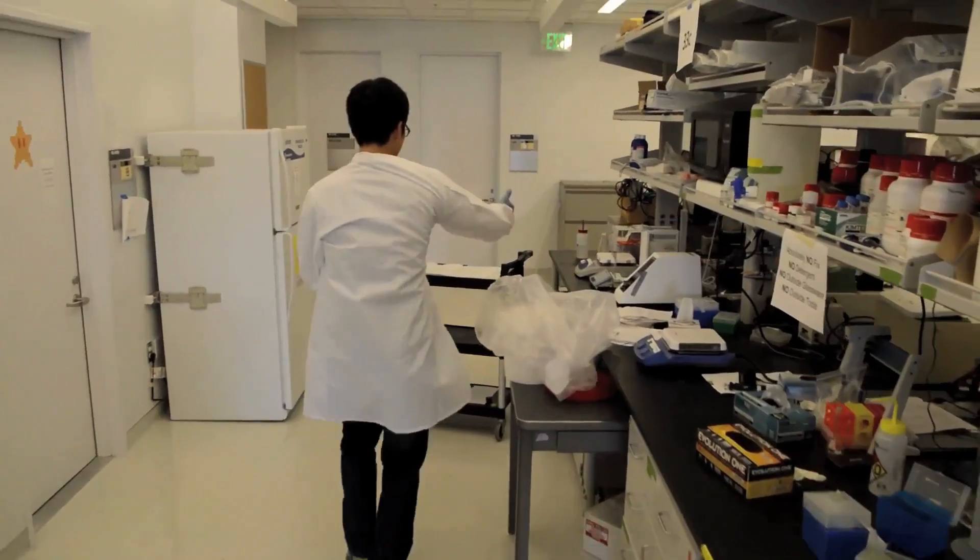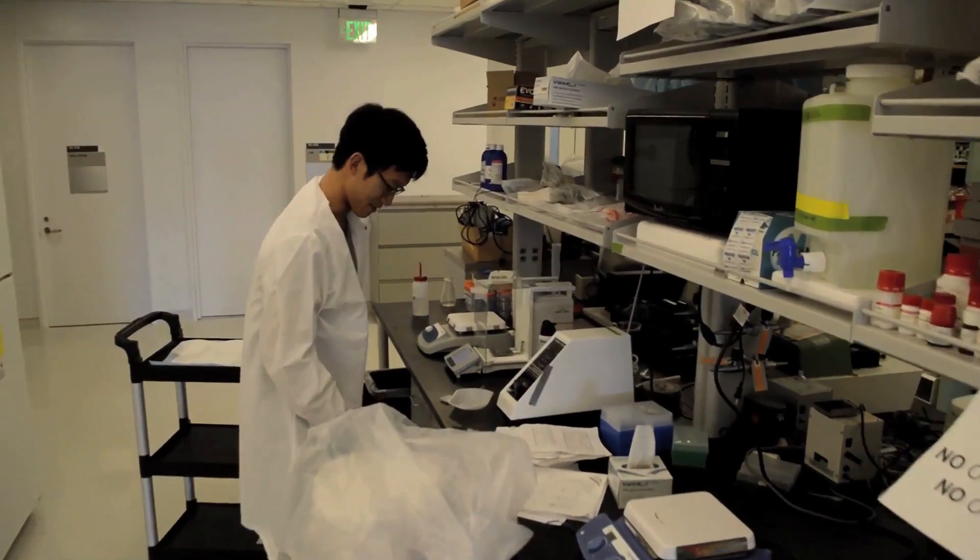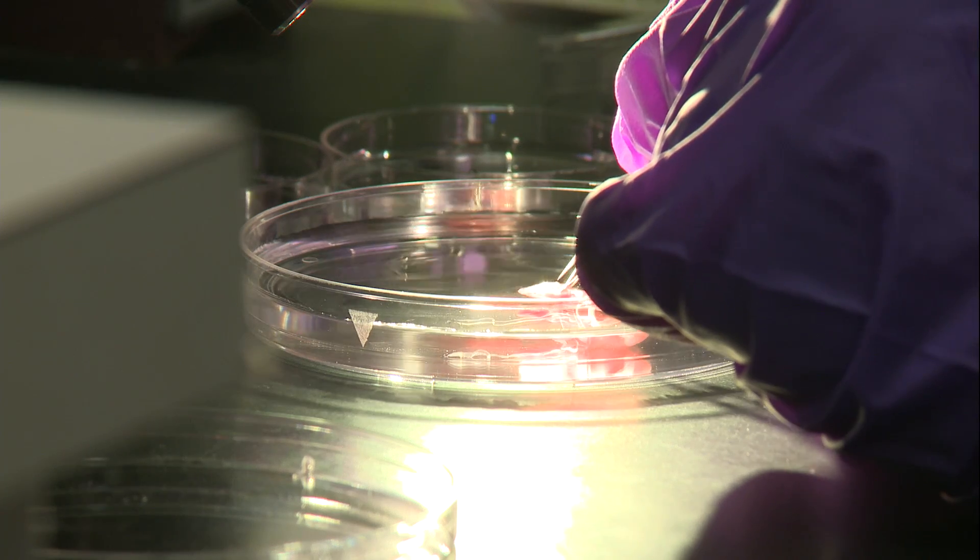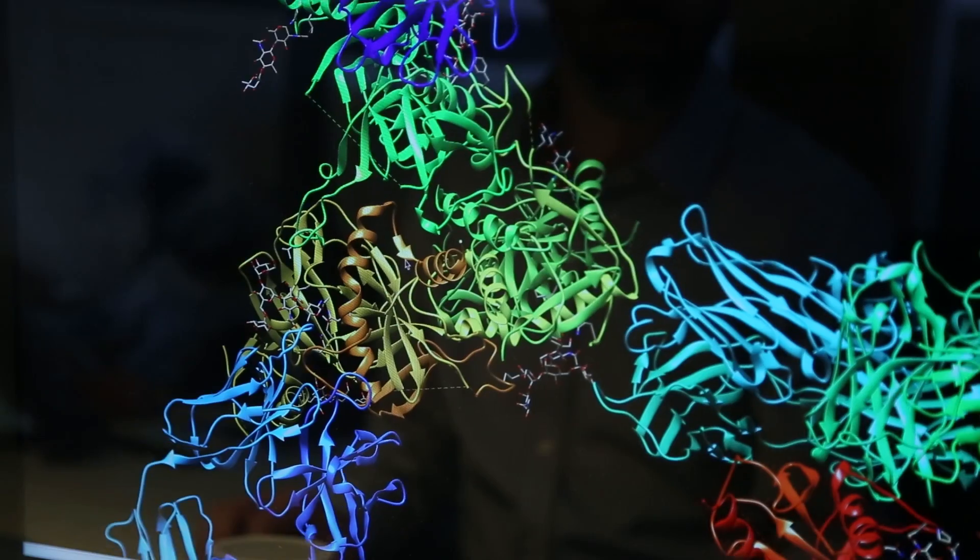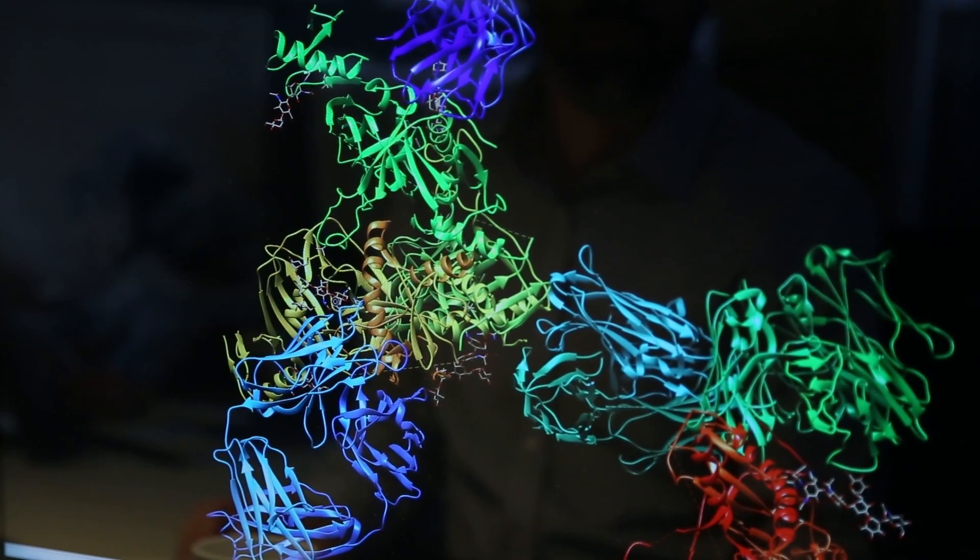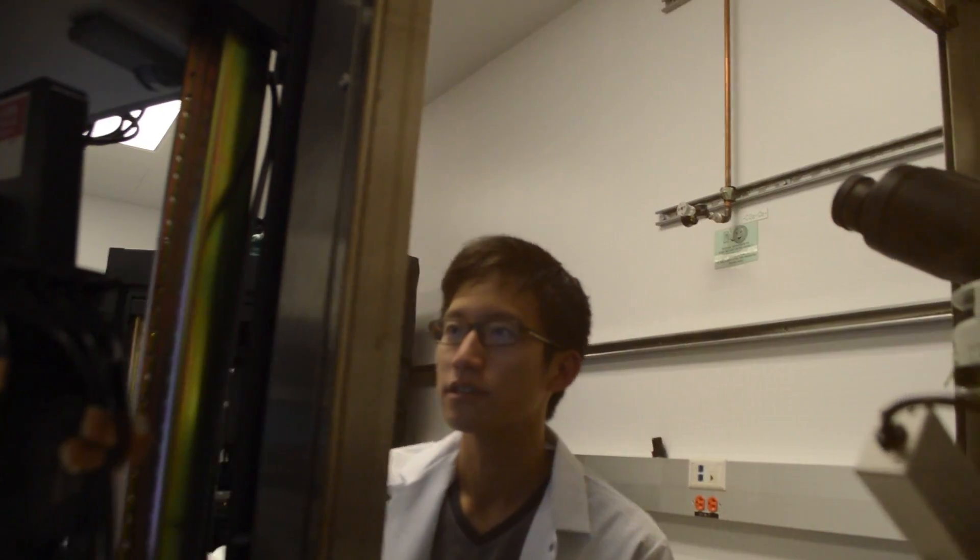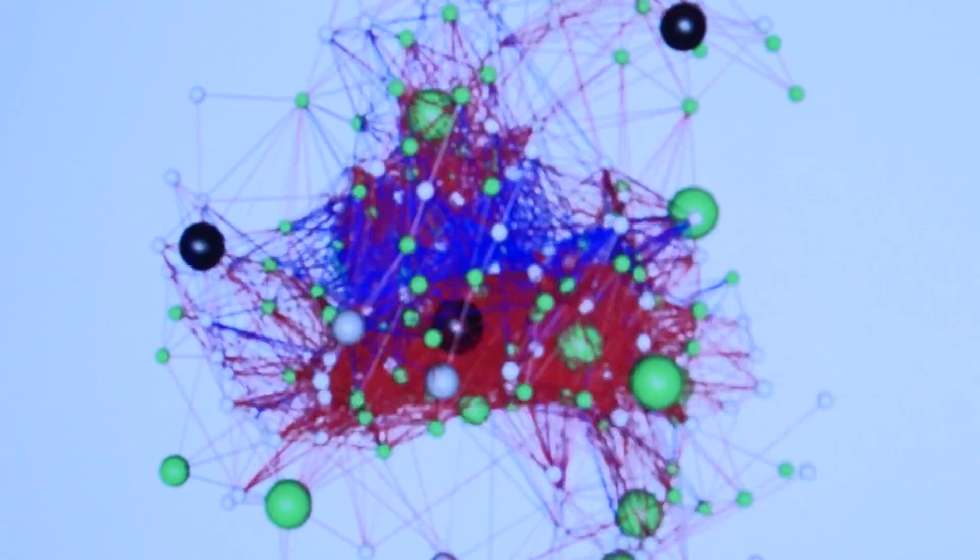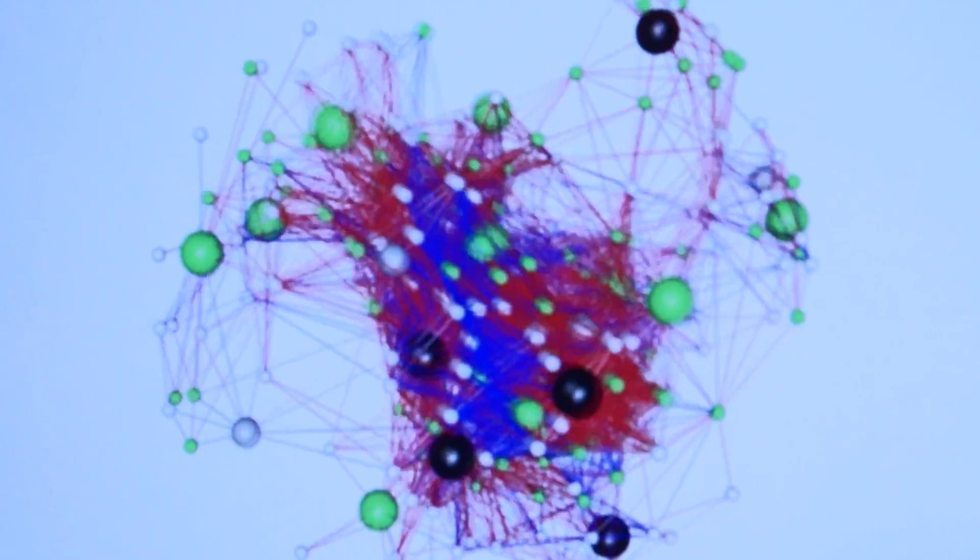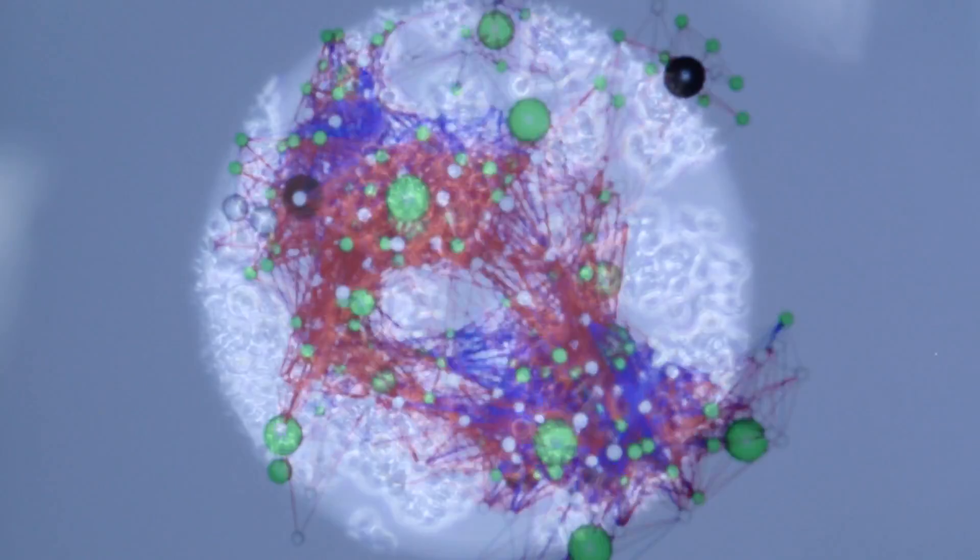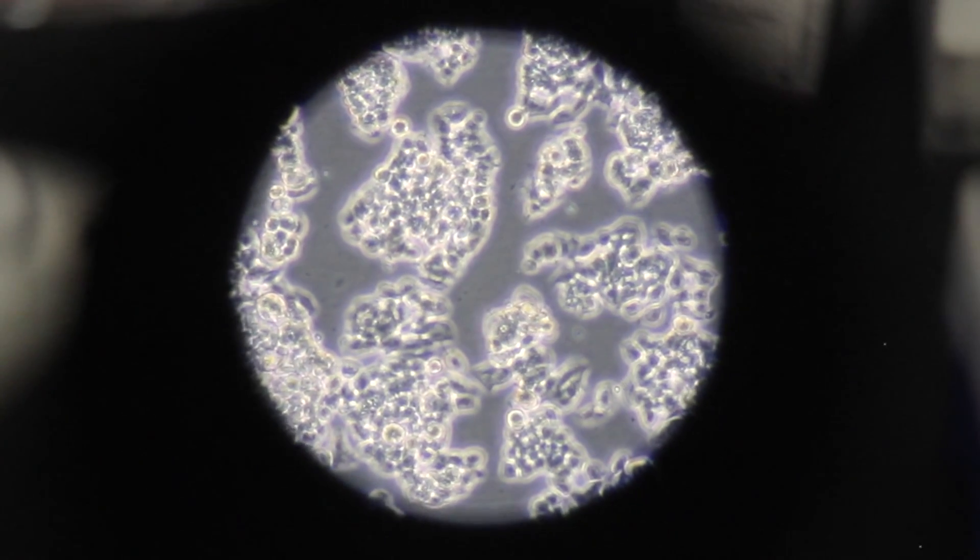We have experiments in the lab where if you disrupt certain cell types it disrupts social interaction or decision making, and these are processes that in some cases really similarly mimic human disease. It's pretty incredible to think that we have these cells arranged in a certain way but the circuit diagram is completely unknown.